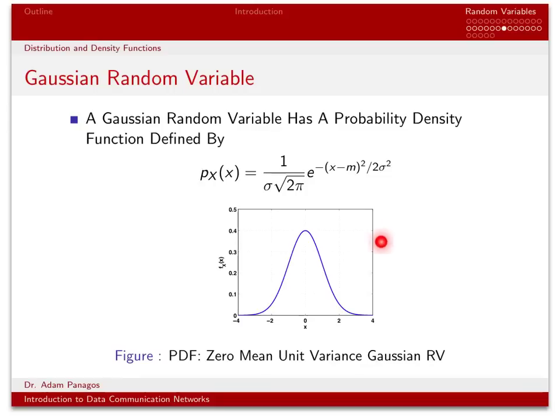This plot shows the PDF for a 0-mean unit-variance Gaussian random variable. By 0-mean, we mean specifically that the parameter m equals 0, and that's why it's centered right at 0. Unit variance means that sigma squared equals 1, so sigma is also 1. In this case, standard deviation and variance are both equal to 1.